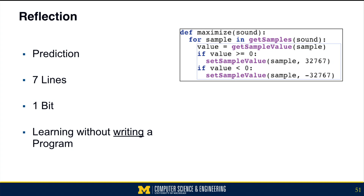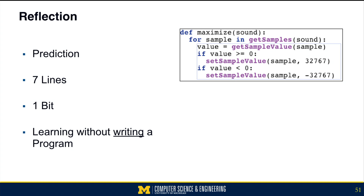Finally, none of you wrote this code. I wrote this code, I executed this code, we talked about this code. I'm hoping that you learned something from playing with this program. But you didn't actually have to write a program. It isn't necessary to write code in order to learn from code. And this is an example of teaching computer science for insights into our world, not just to teach software development skills.